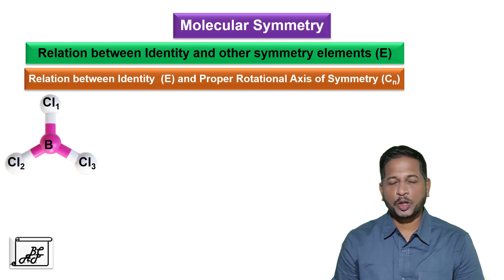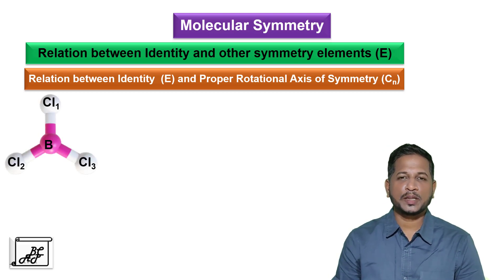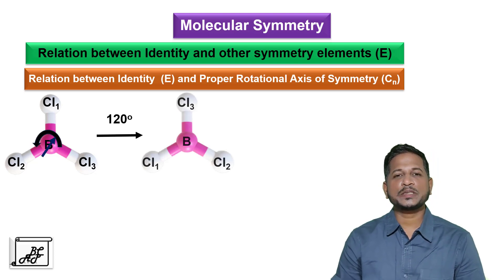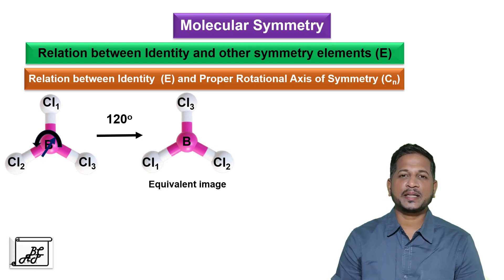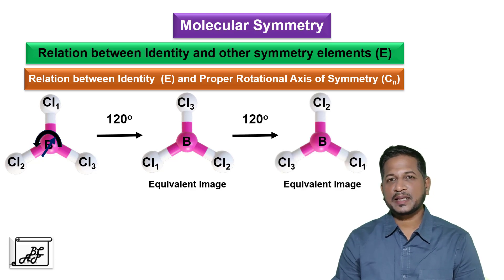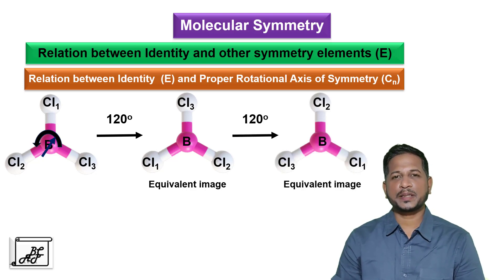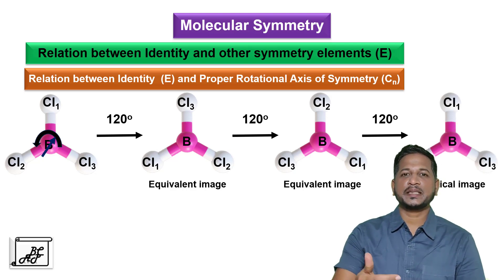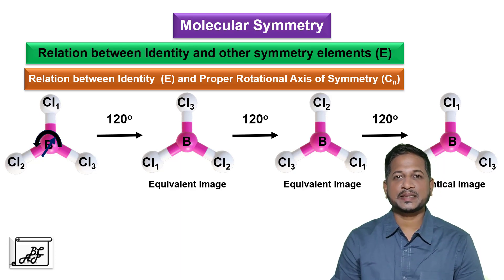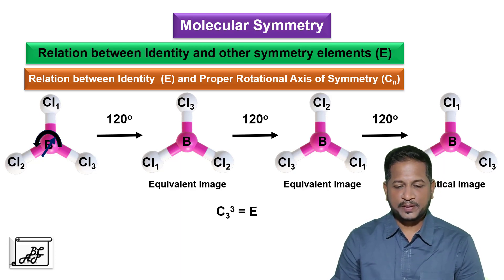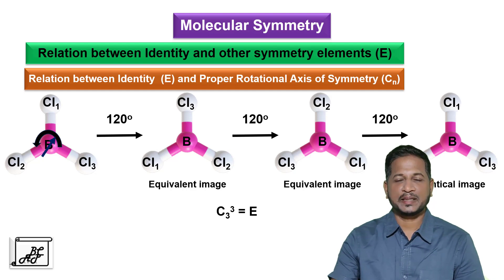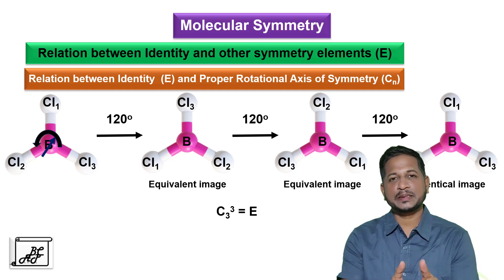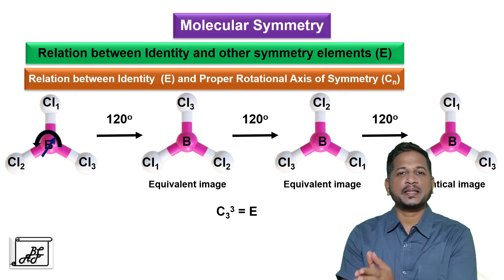For example, consider the BCl3 molecule. In BCl3, there is a C3 rotational axis, which is the principal rotational axis. If we carry out the operation through 120 degrees, we will get an equivalent image. If we repeat the operation, we get another equivalent image. And if we repeat it again, we will get an identical image. So after three rotations around the C3 axis, we get the identical image. Therefore, we can write C3 raised to 3 is equal to E — that is the relation between the principal rotational axis and the identity element.